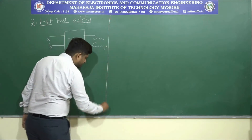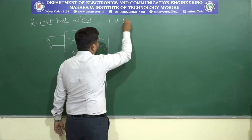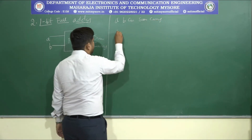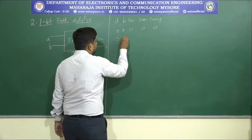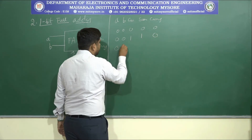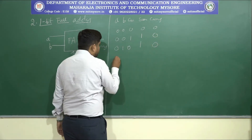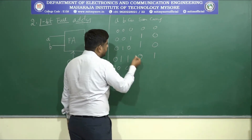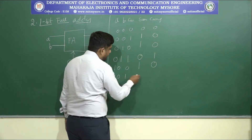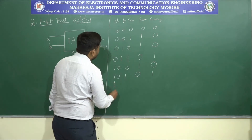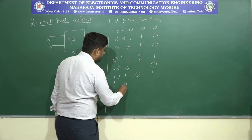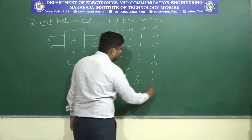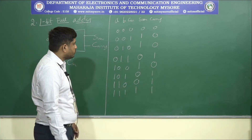Next we write the truth table with columns A, B, C_in, Sum, and Carry. When inputs are 0,0,0: sum=0, carry=0. When 0,0,1: sum=1, carry=0. When 0,1,0: sum=1, carry=0. When 0,1,1: sum=0, carry=1. When 1,0,0: sum=1, carry=0. When 1,0,1: sum=0, carry=1. When 1,1,0: sum=1, carry=1. When 1,1,1: sum=1, carry=1.